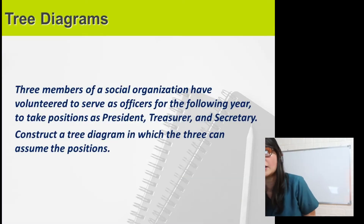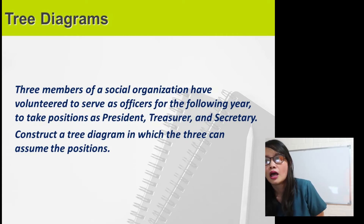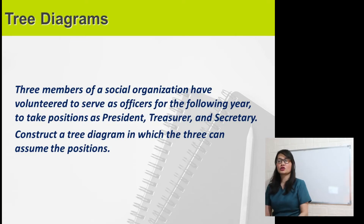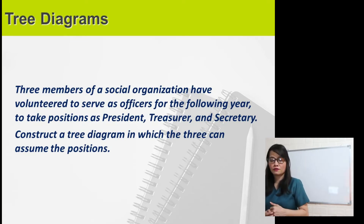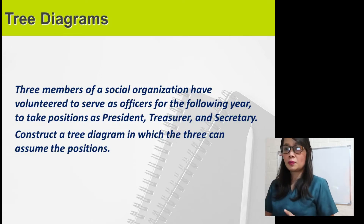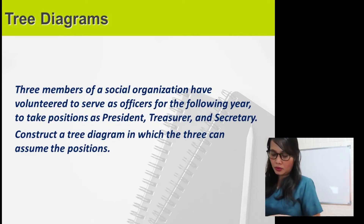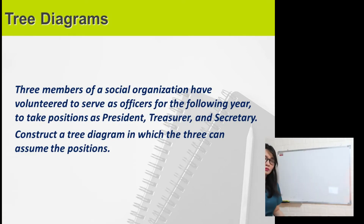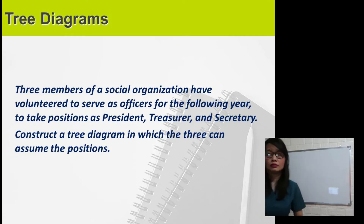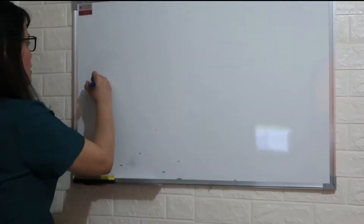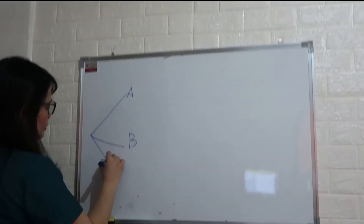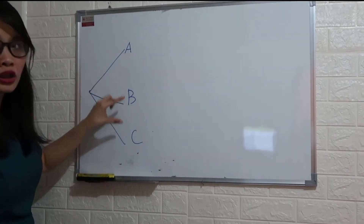Next: three members of a social organization have volunteered to serve as officers for the following year, taking positions as president, treasurer, and secretary. Construct a tree diagram in which the three members can assume their positions.